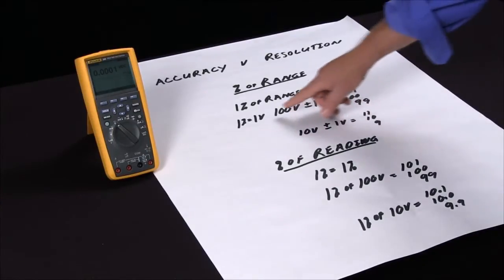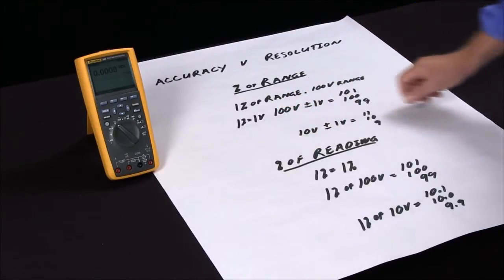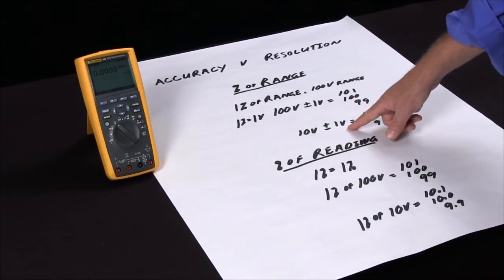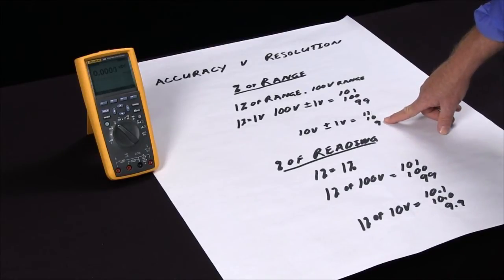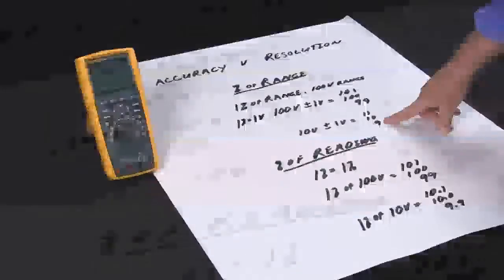The one percent is plus or minus one volt on a ten volt signal. Plus or minus one volt will give us between eleven and nine, which is actually an inaccuracy of ten percent. So with percent of range, the accuracy actually decreases on the same range as you go down with the measurement values.